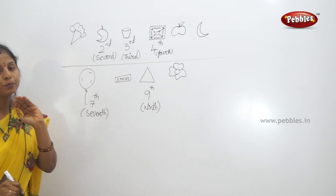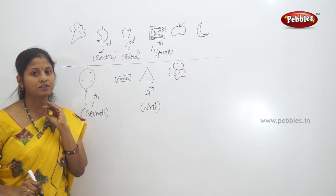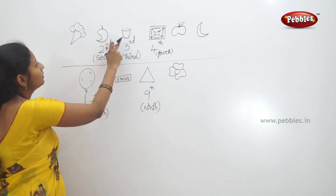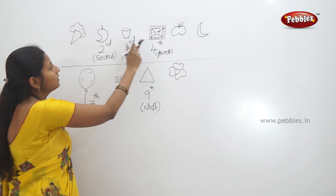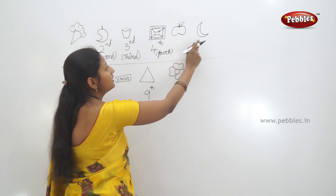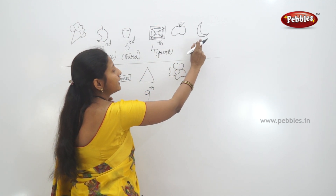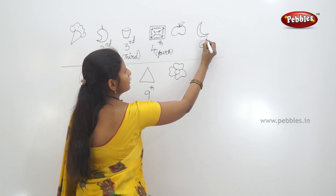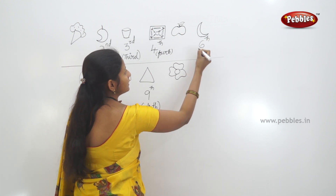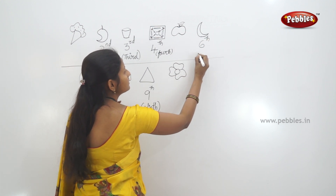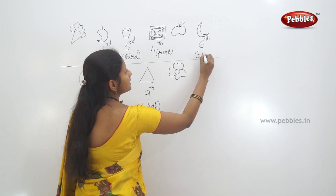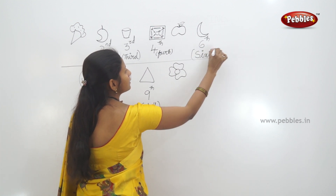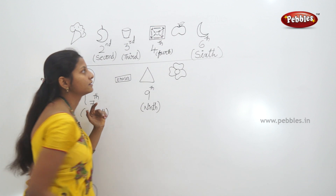Next: moon. Where is moon? One, two, three, four, five, six — sixth place. Moon is in the sixth place. Moon's position is the sixth place. S-I-X-T-H. Sixth.